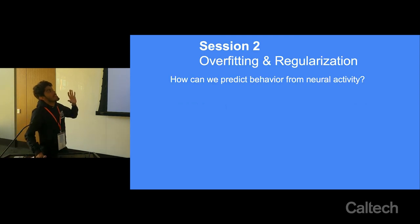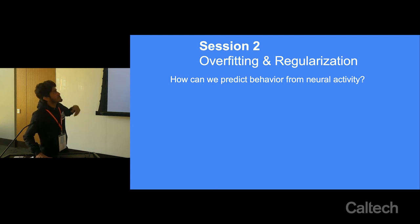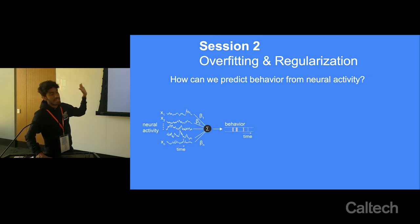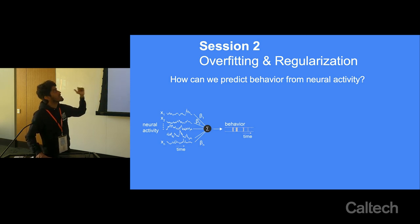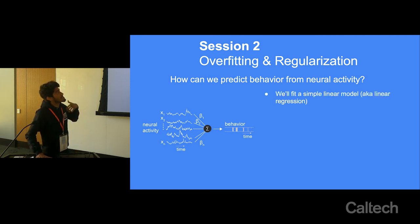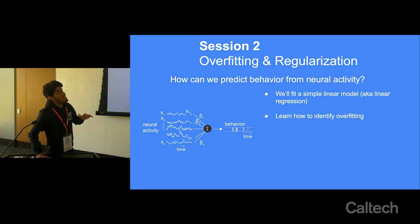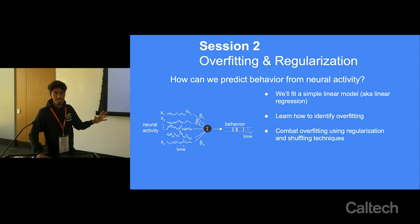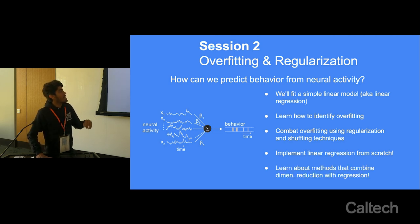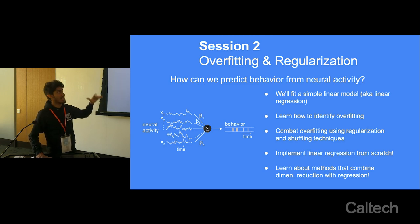In session two, we'll ask: now that we can visualize neural data in a low-dimensional space, can we predict behavior from neural activity? We have recordings of many neurons across many time points and we want to predict behavior — in this example, using hypothalamic neural data to predict attack behavior in a mouse. We'll use simple linear regression via a pre-made Python package, then learn to identify overfitting, combat it using regularization and shuffling, and finally implement linear regression from scratch using matrix operations.